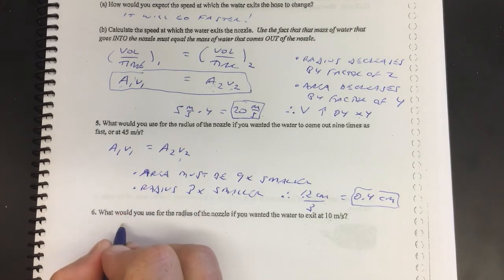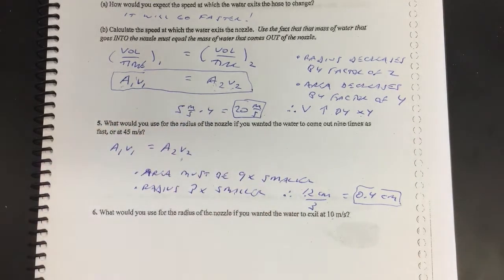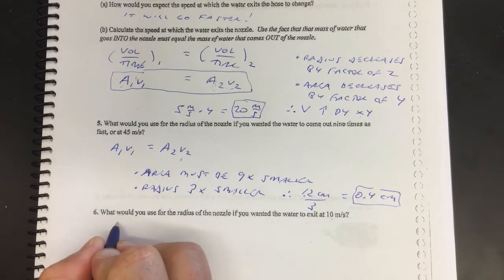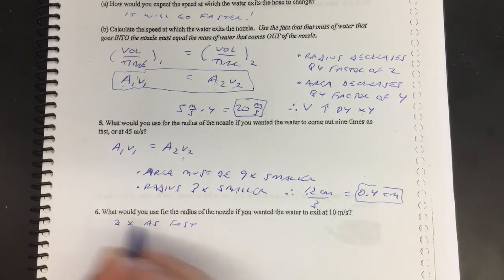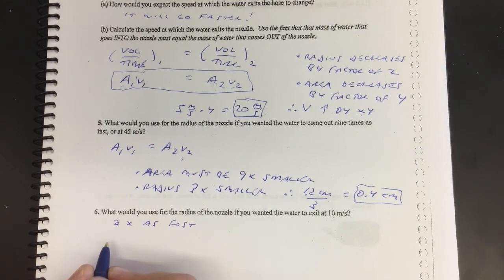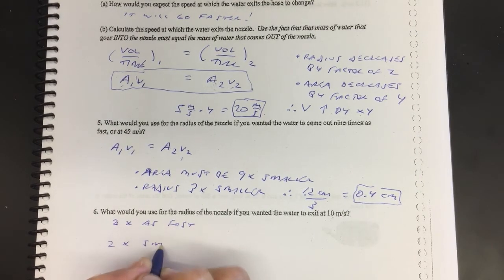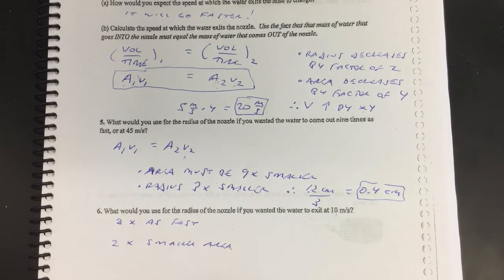A fast way to think about this - again, you could just literally plug numbers into the formula, but it's just faster if you think, well, the speed, so we're twice as fast, 2x as fast, so therefore we've got to have what? Half the area, so we need a two times smaller area.